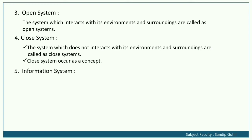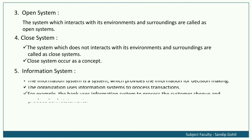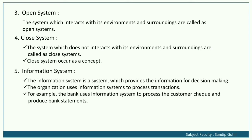Information system: An information system is a system which provides information for decision-making. Organizations use information systems to process transactions. For example, a bank uses an information system to process customer checks and produce bank statements.